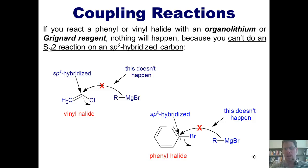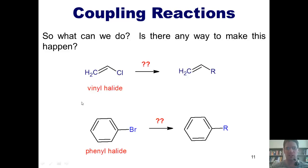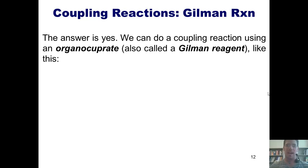The reason is because sp2 hybridized carbons just have too much electron density. So what can we do? Is there any way to take a vinyl halide or a phenyl halide and replace the halogen atoms with some kind of hydrocarbon chain? As it turns out, the answer is yes — we can do this type of transformation, and it requires us to do one of various types of reactions that we call coupling reactions.